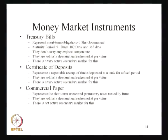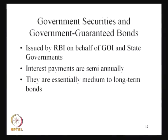Then we have another instrument which we call the commercial paper. It basically represents short-term unsecured promissory notes issued by the firms. Remember, the certificate of deposits can be issued by the banks, but the commercial papers are mostly issued by the companies also. They are sold at discount and redeemed at par value, and there is not an active secondary market for this. That means the commercial papers are not actively traded in the market and they are a little bit riskier than the other instruments within the short-term segment, because they are issued by the corporate and not by the government, banks, or any other financial institution.